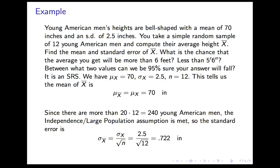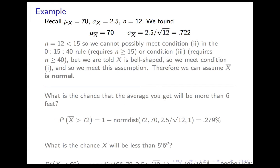The large population assumption justifies computing the standard error: sigma-sub-x-bar equals sigma-sub-x over the square root of n. In our case, that's 2.5 divided by the square root of 12, which gives 0.722 inches. Notice the standard error is much smaller than the original standard deviation — there's much less variation in x-bar than in x. To use normdist, we also check the 0-15-40 rule. With n equals 12, we can't satisfy conditions 2 or 3. Our only hope is knowing x is normal. The problem says x is bell-shaped, so we meet condition 1, and x-bar can be assumed normal.